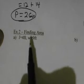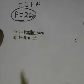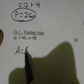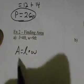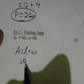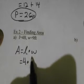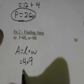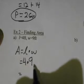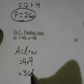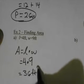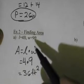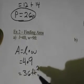Finding area: length is 4, width is 9. First thing I always do is write down the formula: area equals length times width. So our length is 4 times our width, which is 9. Area equals length times width — 4 times 9 is 36 feet squared. The unit is squared because you're taking feet times feet; feet times feet is feet squared.